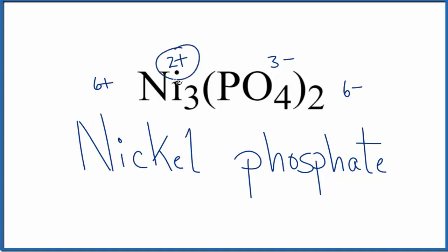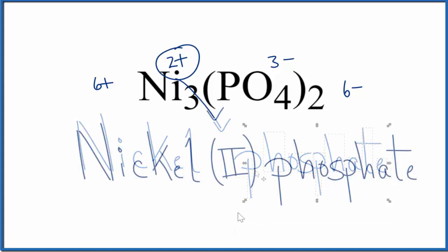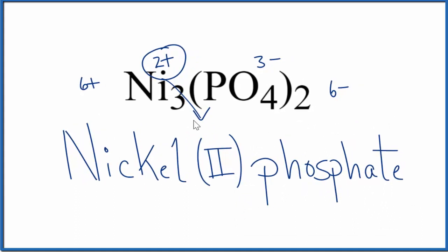So now we'll take this two plus, and we're going to put Roman numeral two between nickel and phosphate. And that makes the name for Ni3(PO4)2 nickel two phosphate. And the two, that refers to this two plus up here.